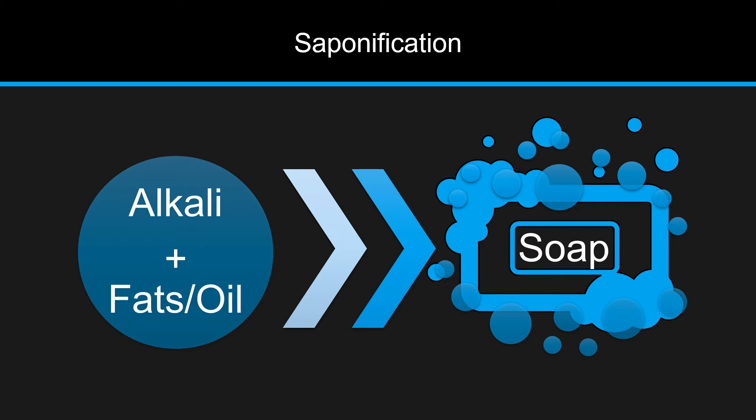Saponification is a reaction between an alkali and fats or oils forming soap and glycerol, which are each soluble in aqueous solutions. Saponification is used by wet chemical fire extinguishers to convert burning fats and oils into non-combustible soap, which helps in extinguishing fire.